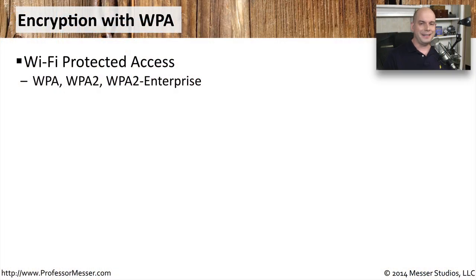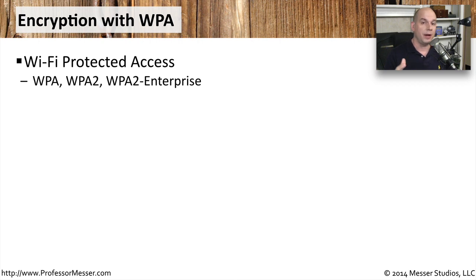In this video, we're going to talk about the technologies used for encryption on wireless networks, specifically on networks using WPA, WPA2, and WPA2 Enterprise. WPA stands for Wi-Fi Protected Access. We're not going to talk about WEP, which stands for Wired Equivalent Privacy. The older WEP encryption was found to have some cryptographic flaws, and you should not and certainly won't see WEP used on today's modern wireless networks.